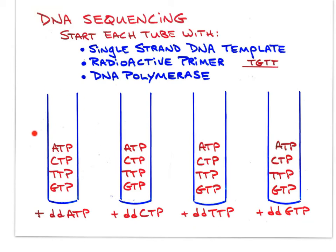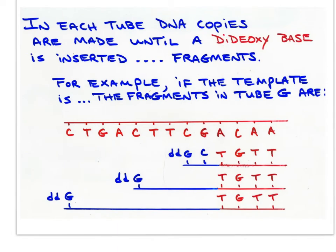In each tube, DNA copies are made until a dideoxy base is inserted, causing chain termination and producing fragments. For example, if the template is a given strand, some fragments in the G tube starting with a primer would end at one G position, some at another, some at another — but note, all the fragments in the G tube end with a G base.